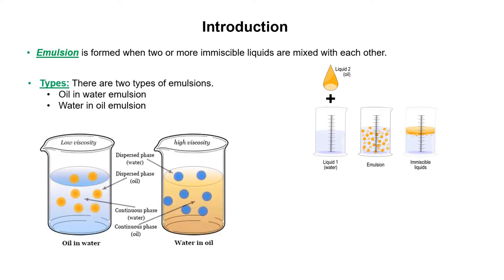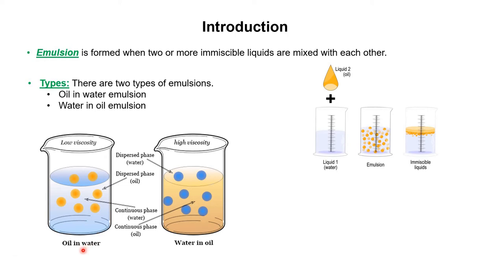Talking about the types of emulsion, there are two types. The first one is oil-in-water emulsion and the second is water-in-oil emulsion. When we say oil-in-water, it means oil is present in water — water is acting as a continuous phase, and oil is present as a dispersed phase, meaning oil is in lesser quantity compared to water. In the case of oil-in-water emulsion, the viscosity is lesser compared to water-in-oil emulsion.